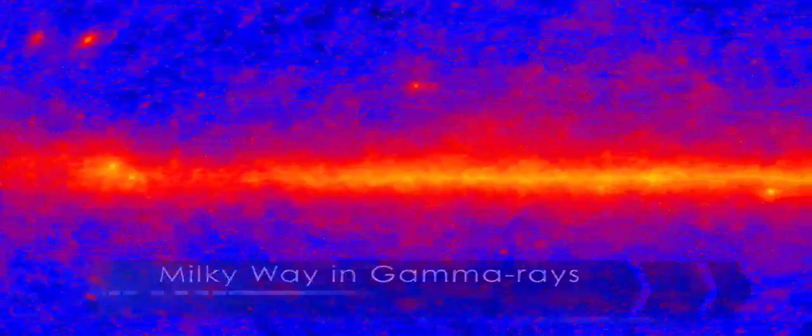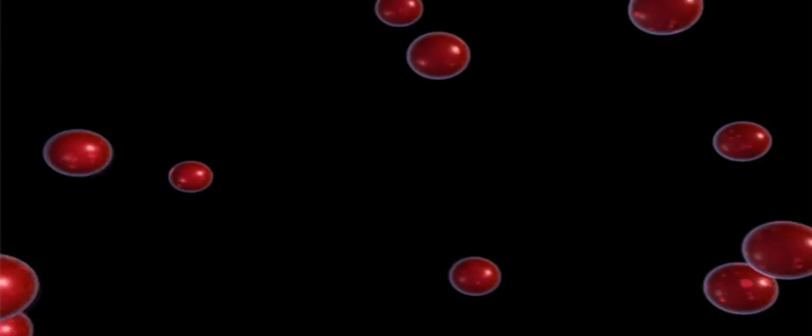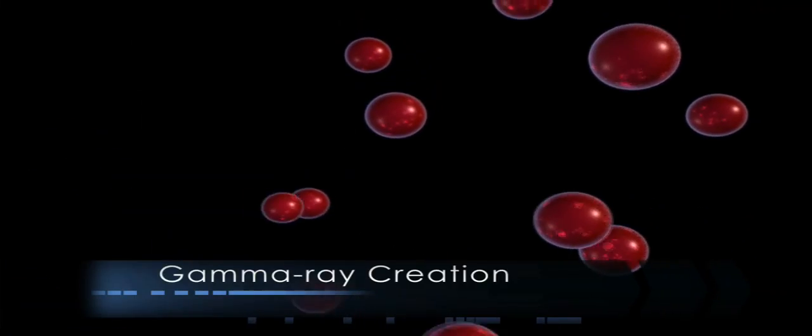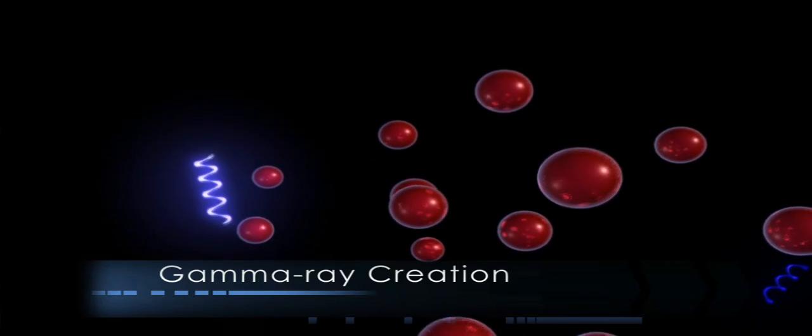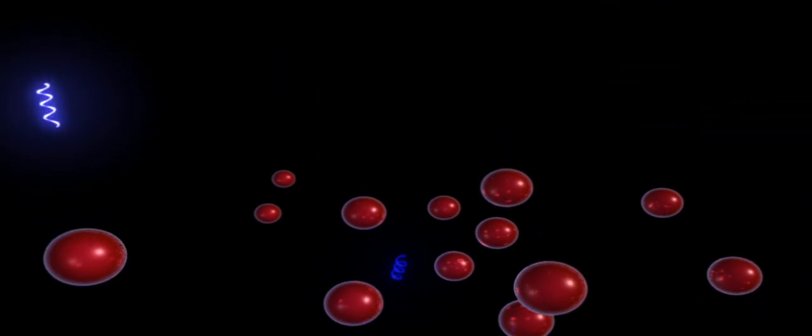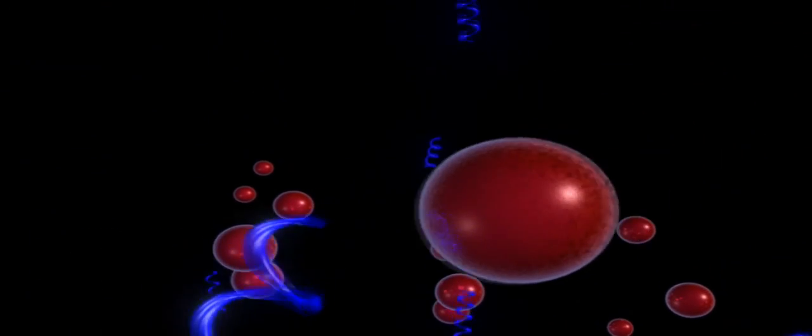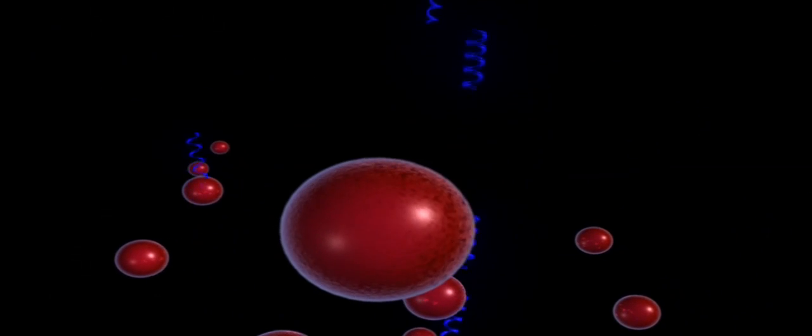These gamma rays arise when high velocity particles called cosmic rays collide with gas atoms in the galaxy's disk. A small fraction of these gamma rays may come from the mutual annihilation of exotic particles. Scientists have proposed such undiscovered particles as a possible explanation for mysterious dark matter.